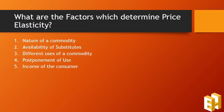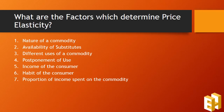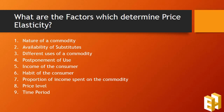Fifth is the income of the consumer — if income is very high or very low, demand is inelastic. Sixth is the habit of the consumer — if a person is habitual to a commodity, demand is inelastic. Seventh is the proportion of income spent on a commodity — if a small proportion is spent, demand is inelastic, and vice versa. Eighth is the price level — if the price level is high, demand is highly elastic, and vice versa. Ninth is the time period — if the time period is short, demand is inelastic, and if it is long, demand is elastic.